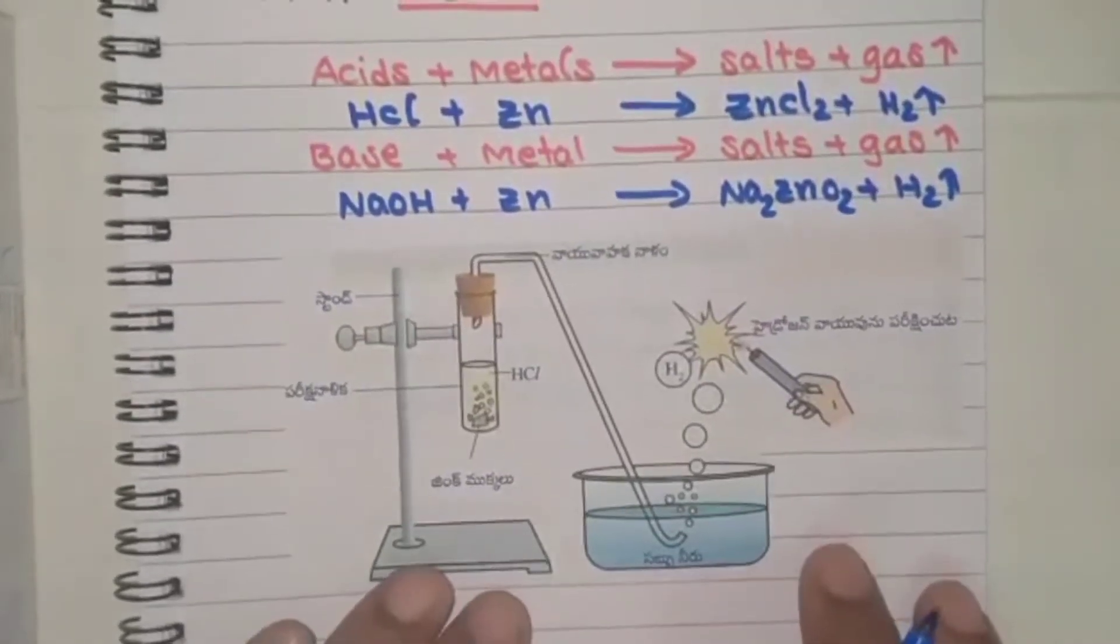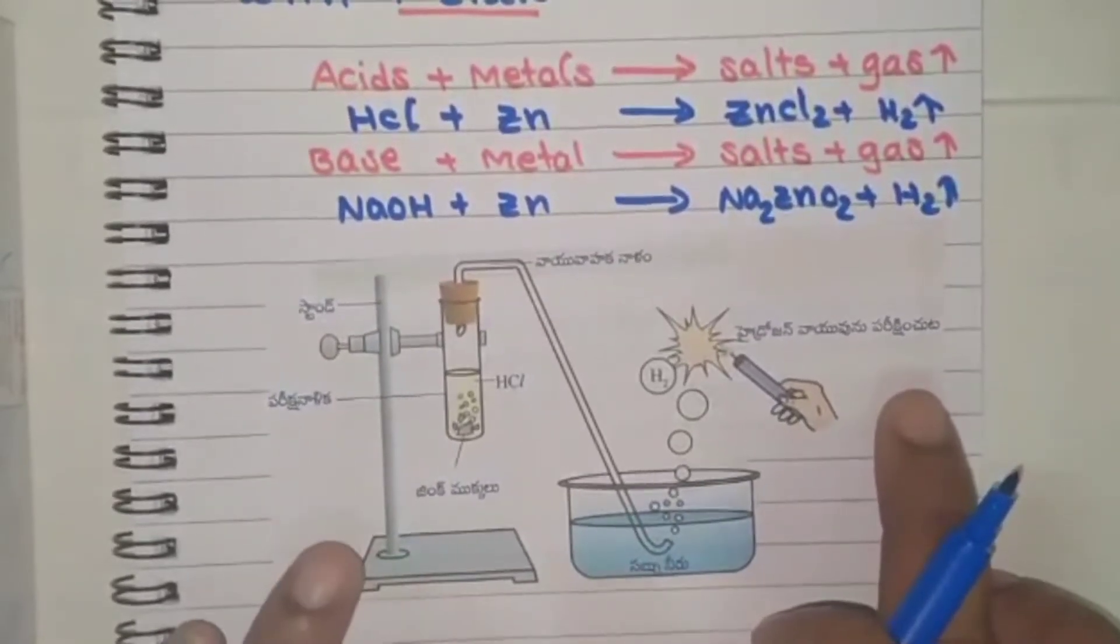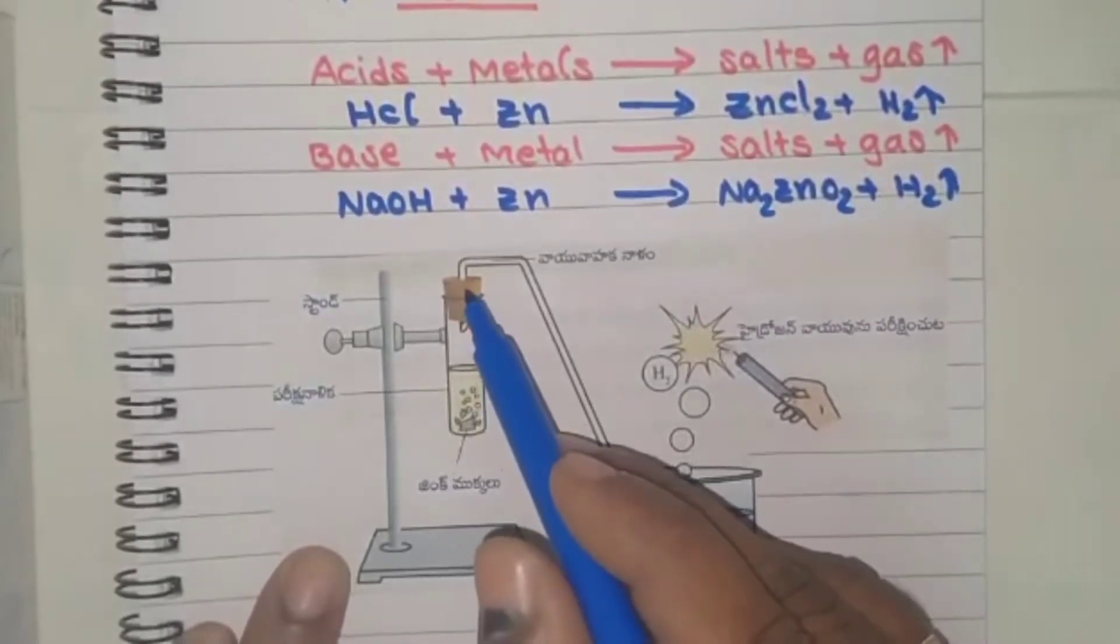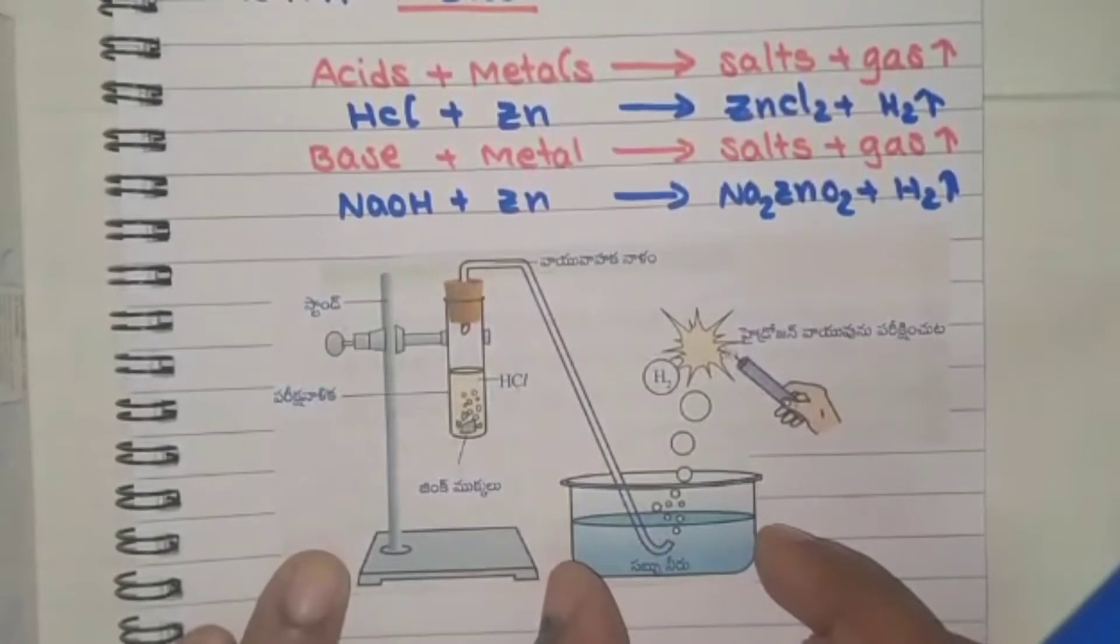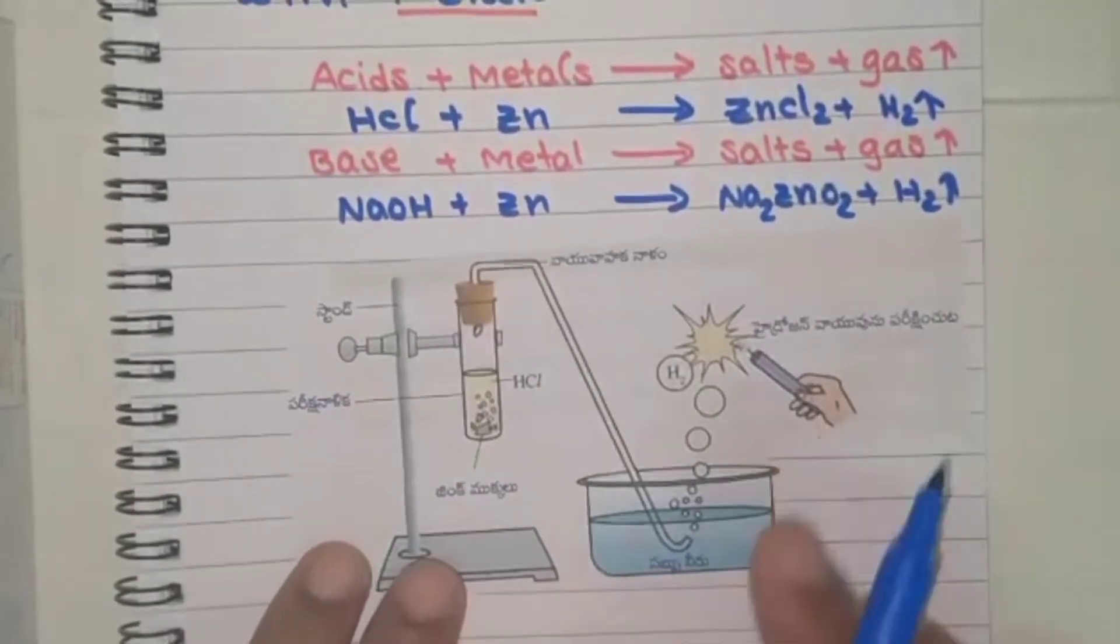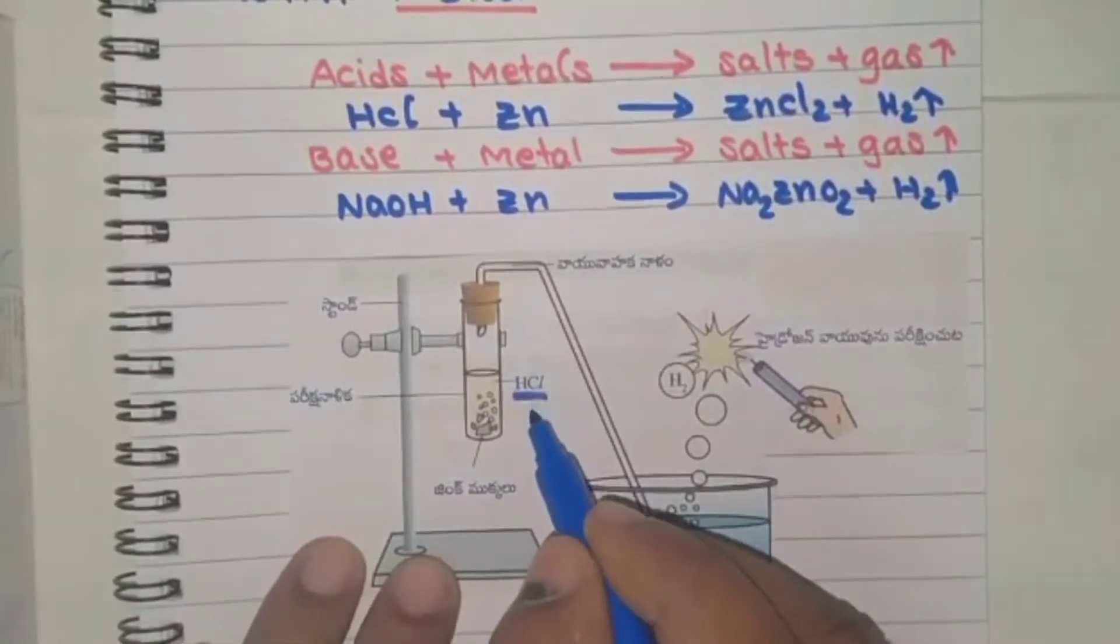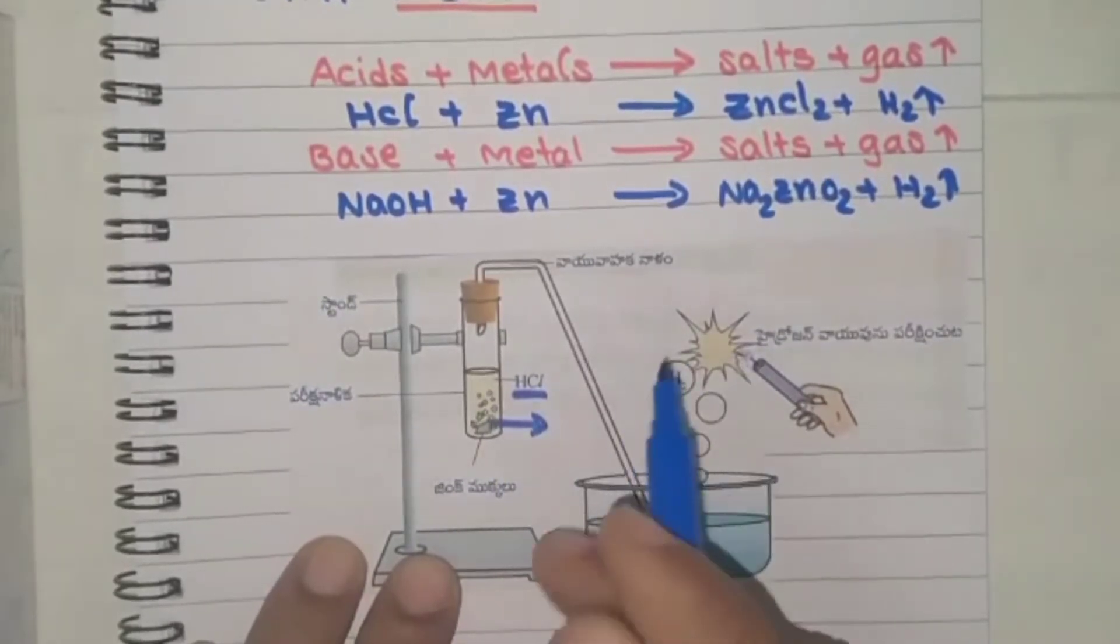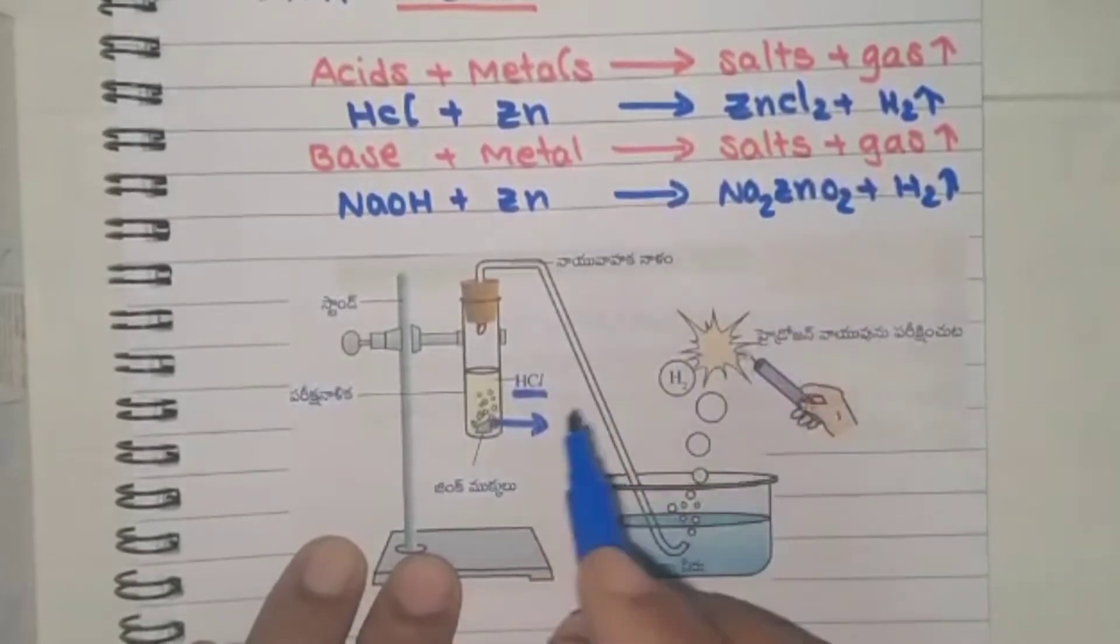Let's see the activity. We require some equipment. Take one test tube and rubber cork and one delivery tube and one beaker. In these substances, mainly hydrochloric acid is selected. This is acid, and some few granules like these zinc pieces are available.